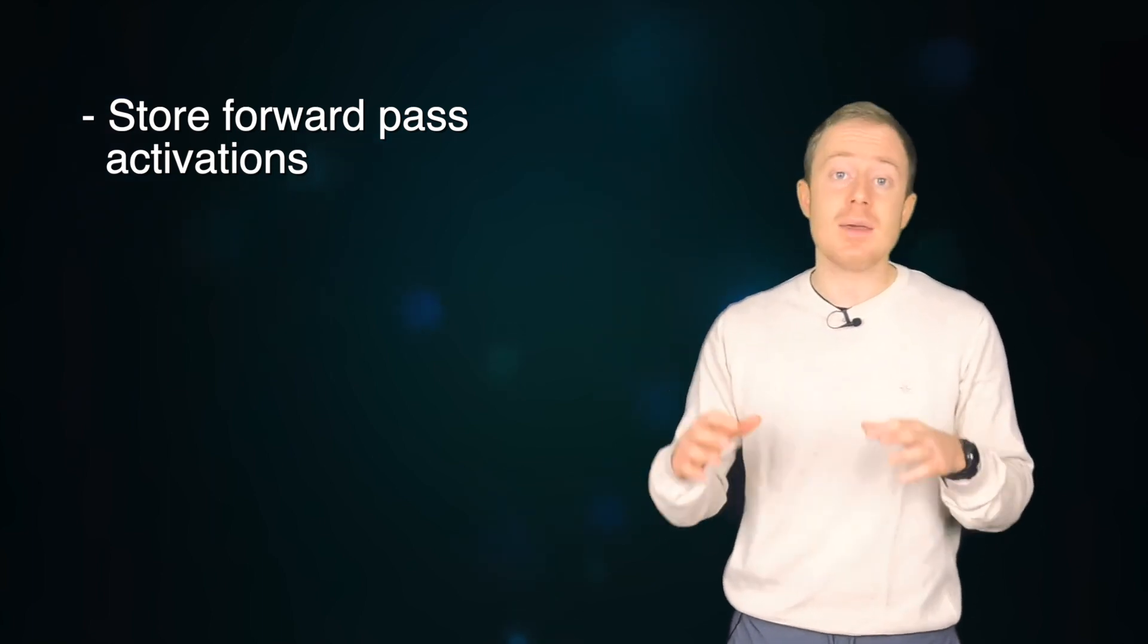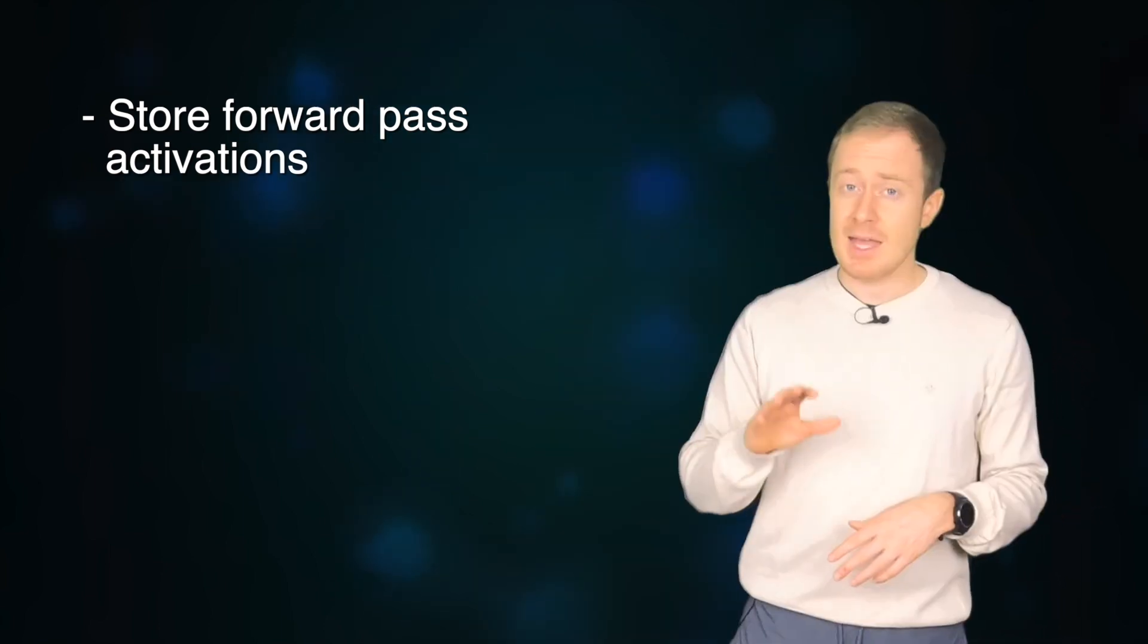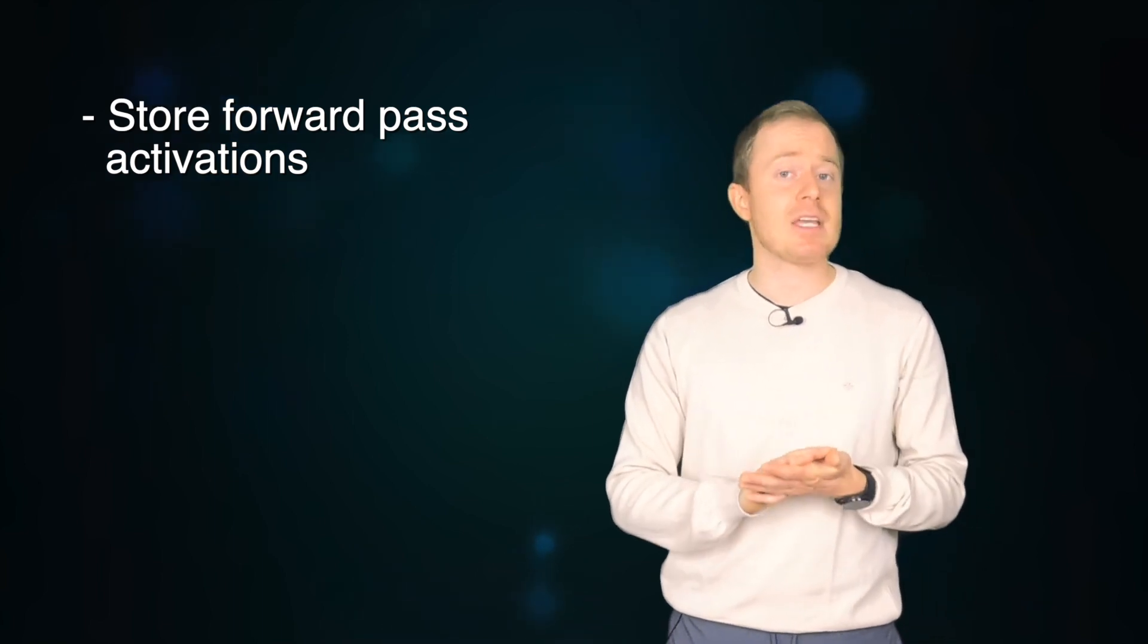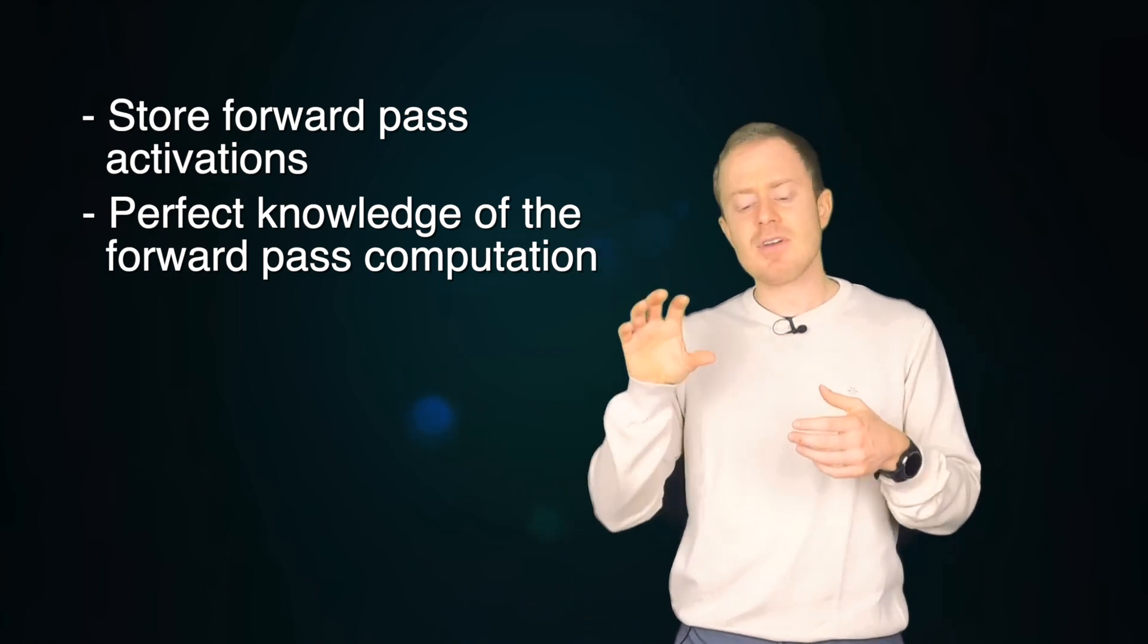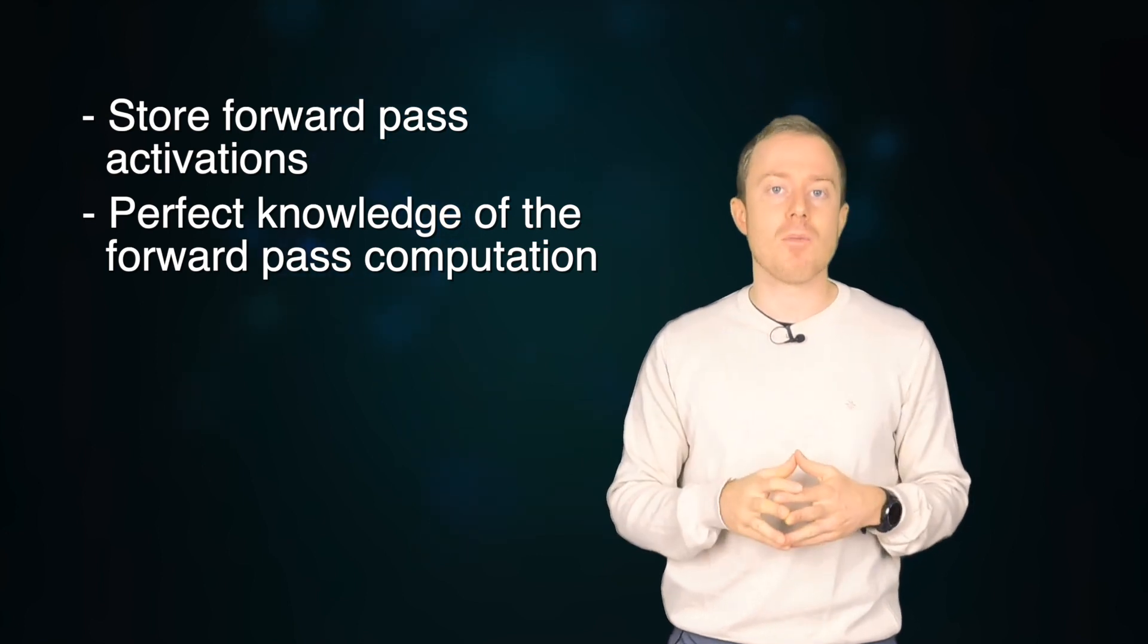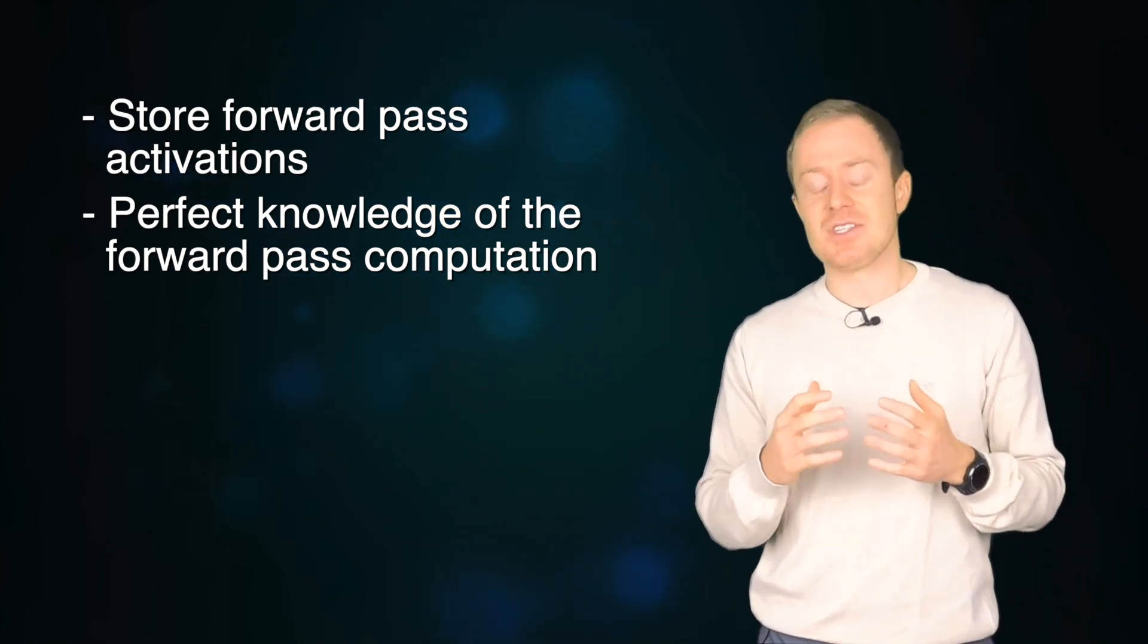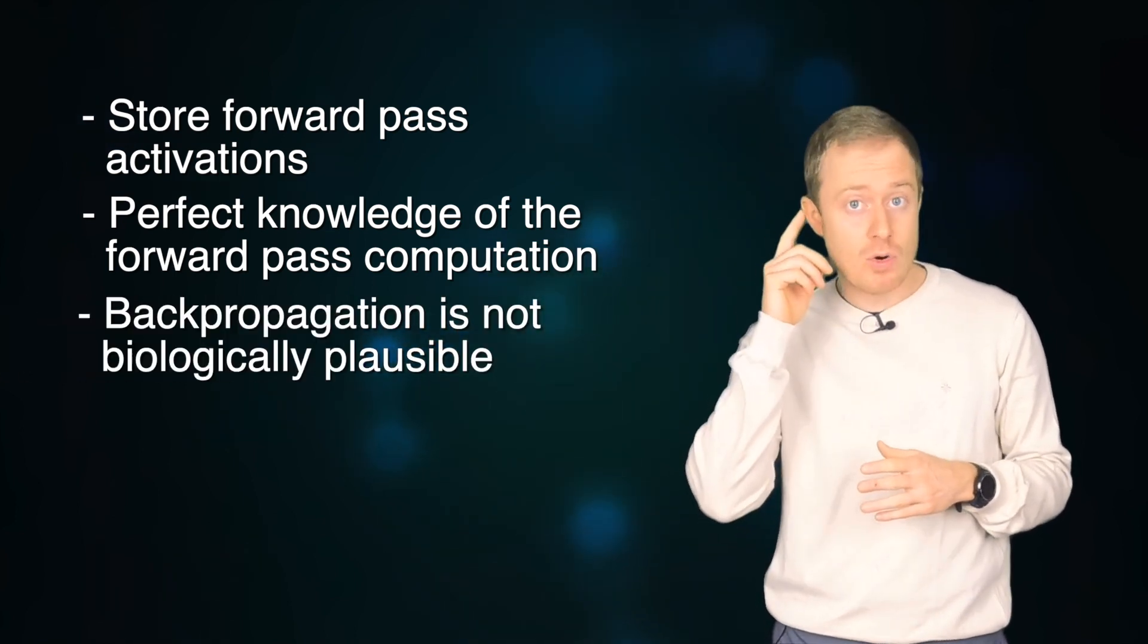Backprop works perfectly well for most of the problems, but it also suffers from some limitations. For instance, it needs to store activations of all neurons for all input samples to work. This requires a lot of power and a lot of memory to work with big batches. Then in order to work, backpropagation requires perfect knowledge of the computation performed in the forward pass. Indeed, if we insert a black box into the forward pass, we can no longer perform backpropagation. Finally, and this is very important for Hinton, backpropagation is not the algorithm used by our cortex to learn.